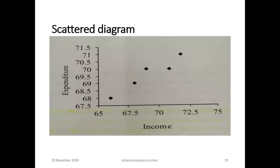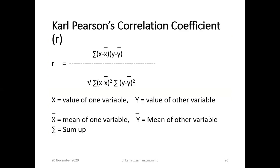In the scatter diagram, income and expenditure are plotted, showing a positive correlation. Karl Pearson's correlation coefficient R is calculated as: R equals the sum of (x minus x-bar) times (y minus y-bar), divided by the square root of the sum of (x minus x-bar) squared times the sum of (y minus y-bar) squared.